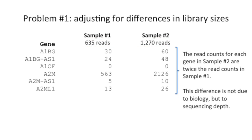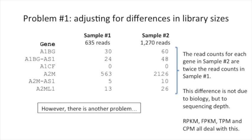Sample number one has half as many reads as sample number two. The read counts for each gene in sample number two are twice the read counts in sample number one. This difference is not due to biology, but to sequencing depth. RPKM, FPKM, TPM, and CPM all deal with this. No big deal. However, there is another problem.